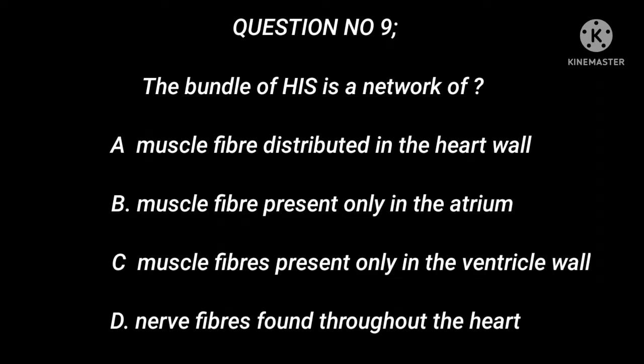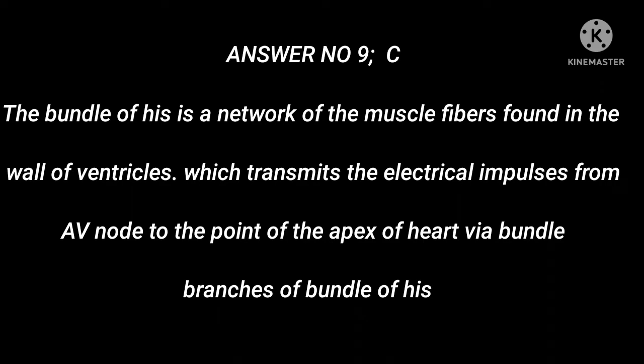Question number 9: The bundle of His is a network of — A. Muscle fibers distributed in the heart wall. B. Muscle fibers present only in the atrium. C. Muscle fibers present only in the ventricle wall. D. Nerve fibers found throughout the heart. Answer number 9: C. The bundle of His is a network of muscle fibers found in the wall of the ventricles, which transmits the electrical impulses from the AV node to the apex of the heart via bundle branches.